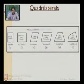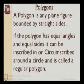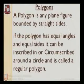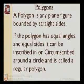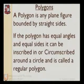Trapezium has no equal sides and no equal angles. If a quadrilateral has all different sides and different angles, it is called a trapezium. Next, moving on further, is the polygon. A polygon is any plane figure bounded by straight sides. If the polygon has equal angles and equal sides, it can be inscribed or circumscribed around a circle and is called a regular polygon.